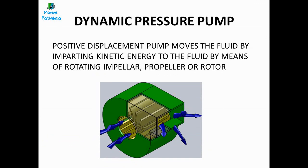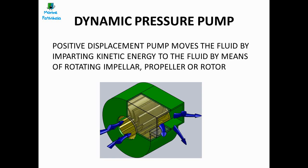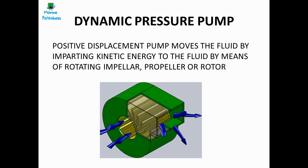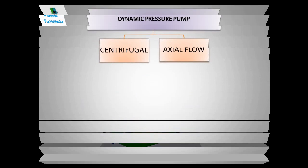Now let us see what dynamic pressure pumps are. These pumps move the fluid by imparting kinetic energy to the fluid by means of rotation. Rotation of the impeller or propeller moves the fluid. Centrifugal pumps are further classified into volute, vortex, and diffuser pumps.